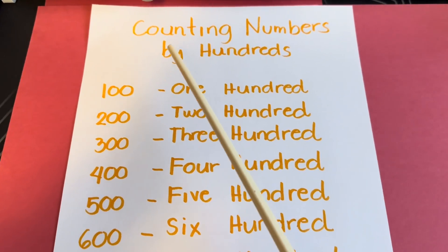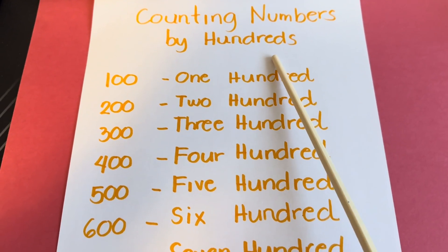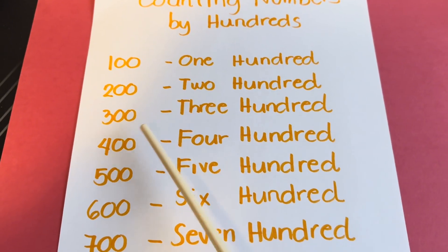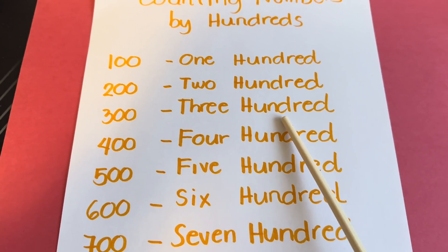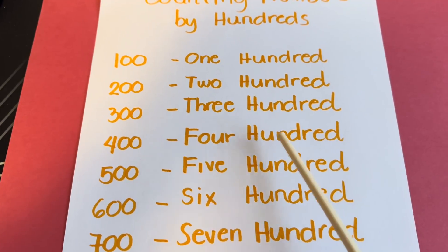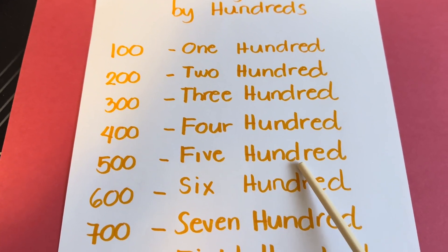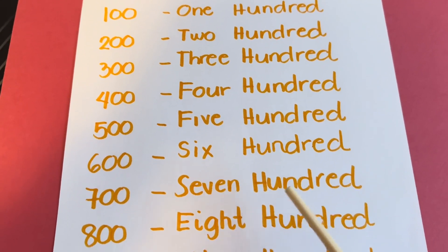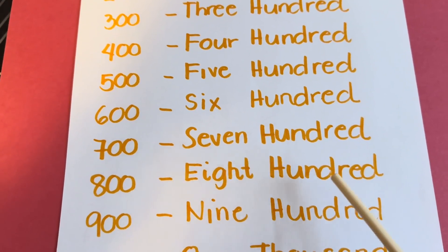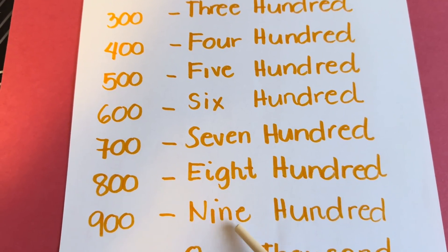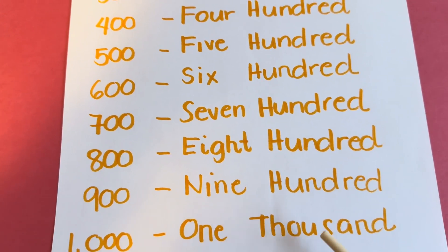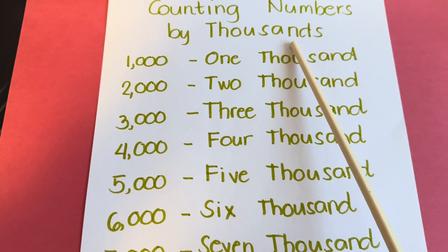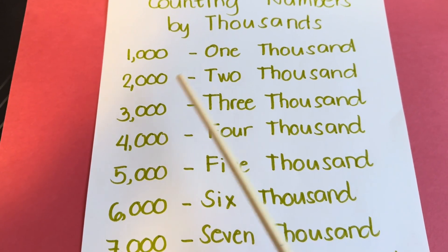Let's summarize. Counting numbers by 100: 100, 200, 300, 400, 500, 600, 700, 800, 900, 1,000.